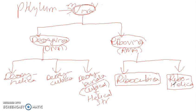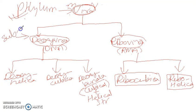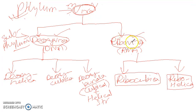So these are regarded as: phylum is called Vira, and Deoxyvira and Ribovira are regarded as sub-phylum. Sub-phylum Deoxyvira has DNA as genetic material; sub-phylum Ribovira has RNA as its genetic material. Deoxyvira is differentiated into three classes.